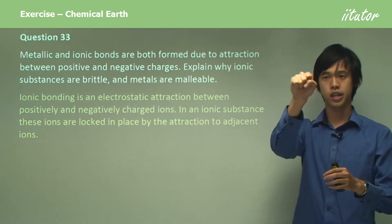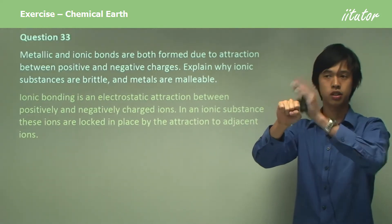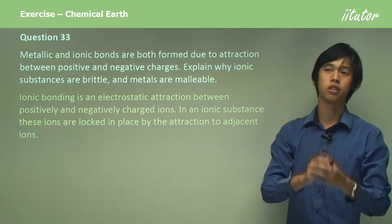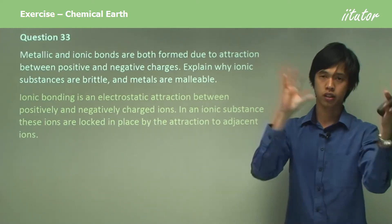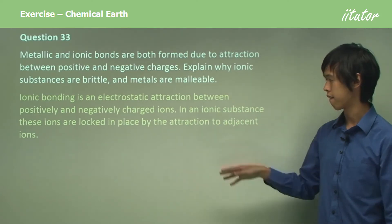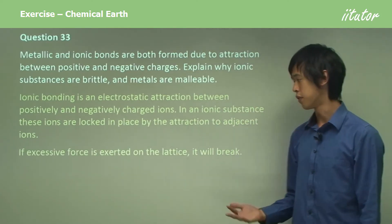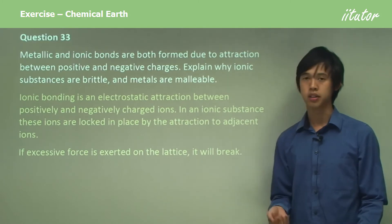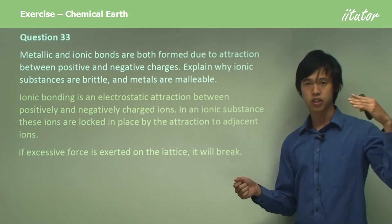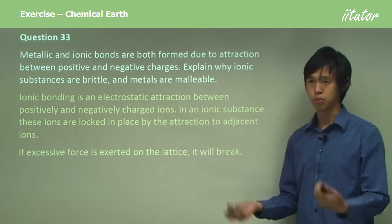The positive ion, say here, is being locked in place by all these negative ions surrounding it. And each of those negative ions is being held by another set of positive ions, and so forth. Now if excessive force is exerted on the lattice, it will break. You will have enough energy to forcibly break some of those bonds and then it will shatter.